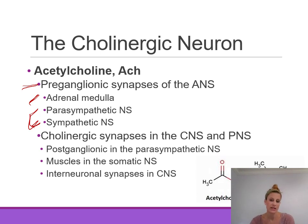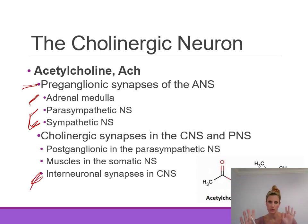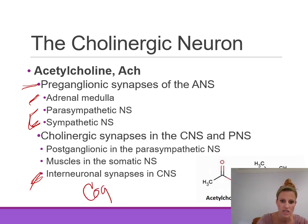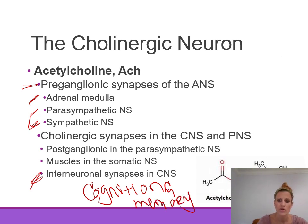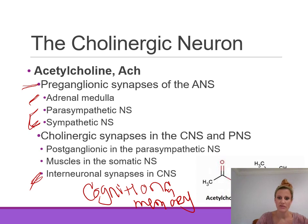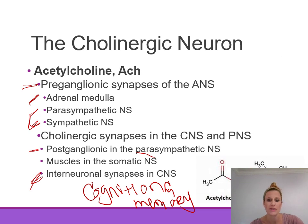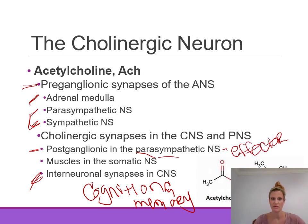The adrenal medulla is innervated and stimulated by acetylcholine. We also have cholinergic synapses in the central nervous system — interneuronal synapses in the CNS that utilize acetylcholine. These are involved in cognition and memory. These cholinergic synapses are important when we talk about Alzheimer's disease and its treatment. The postganglionic synapses of the parasympathetic nervous system also utilize acetylcholine — these are cholinergic neurons where the neuron innervates the effector organ.